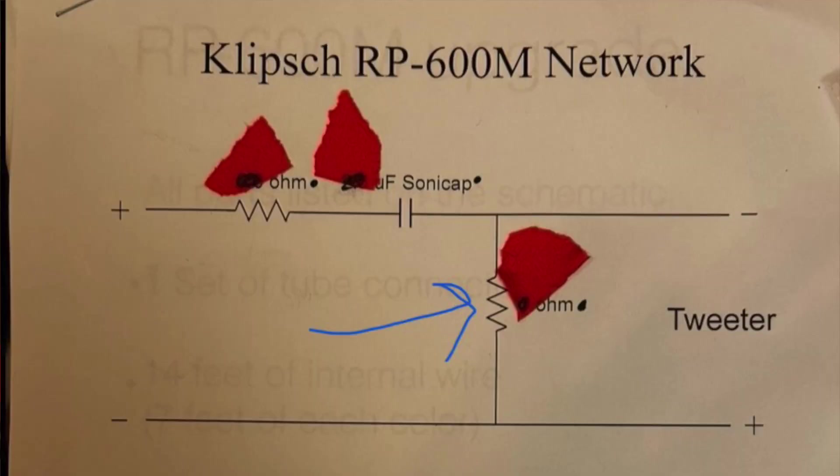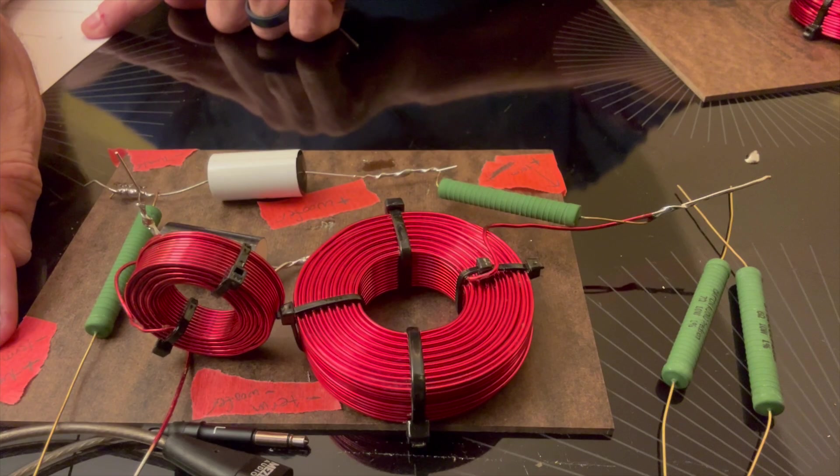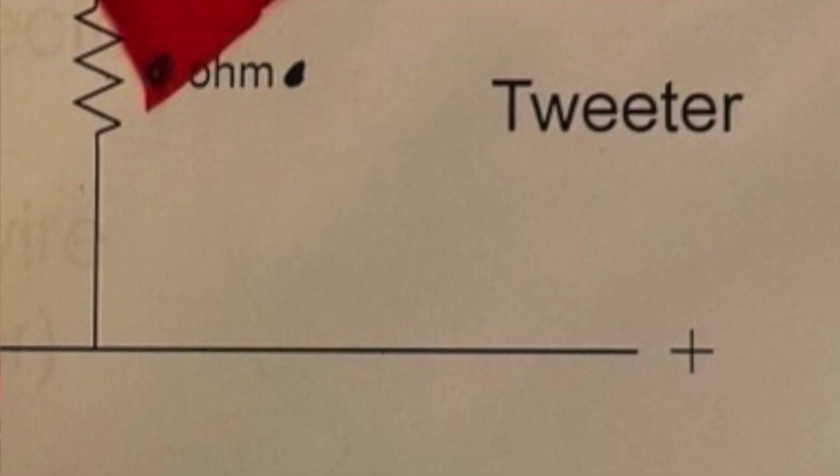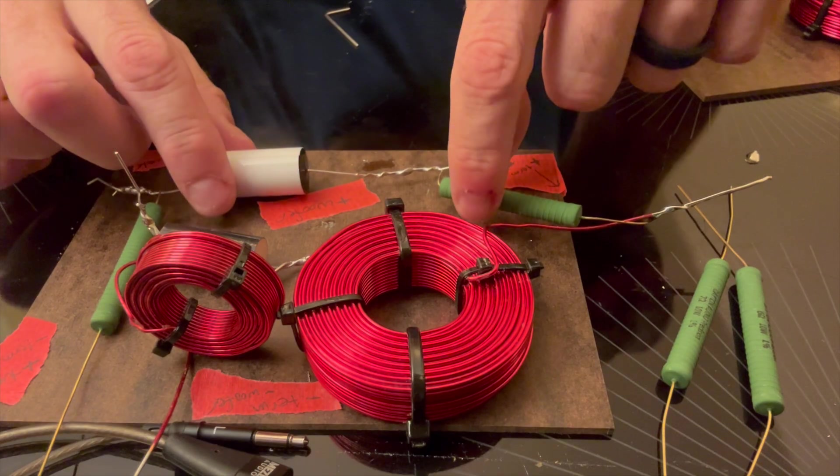Then you see where it goes to that second resistor. On the bottom of that, you'll see that it goes both to the positive of the tweeter but also the negative of the terminal. For the tweeter it's reversed, not sure why. I figured Danny knows what he's doing.